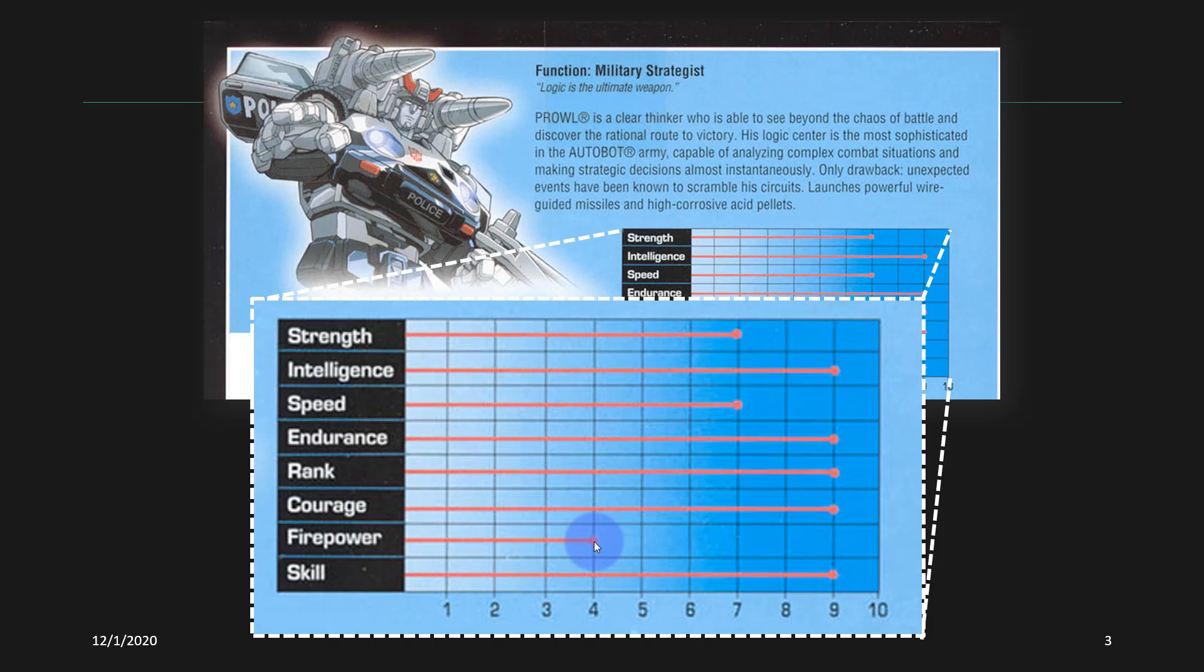And this kind of chart, this is essentially an early kind of bar plot, gives us some quick description of how Prowl functions. It doesn't tell us how he'll do in every situation, it's not the complete picture of everything, but it's a nice concise summary and it tells us a lot about who this individual is.